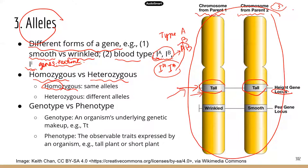If you have two different alleles for a particular gene, then you are heterozygous. For example, for the gene that codes for the texture of seeds, this individual has one allele that codes for wrinkled seeds and another that codes for smooth seeds — those are two different alleles, so this individual is heterozygous for the texture gene. When we talk about homozygous or heterozygous, we always refer to a particular gene.